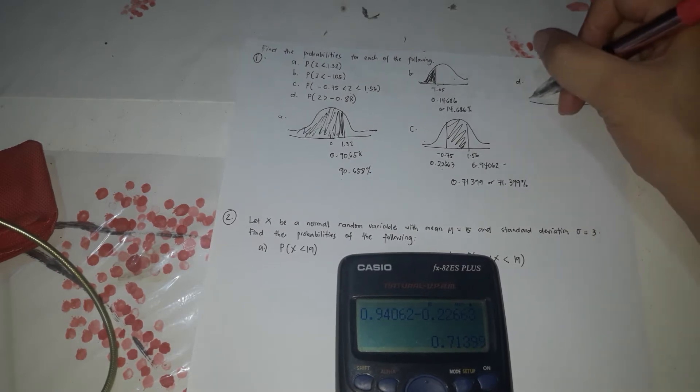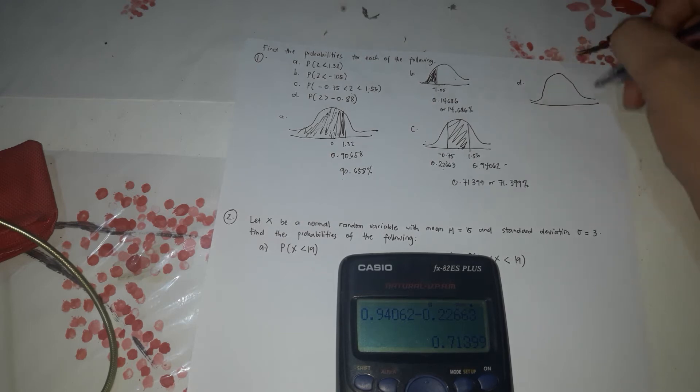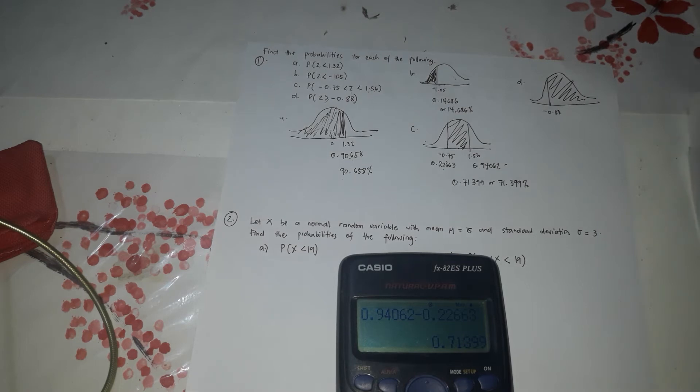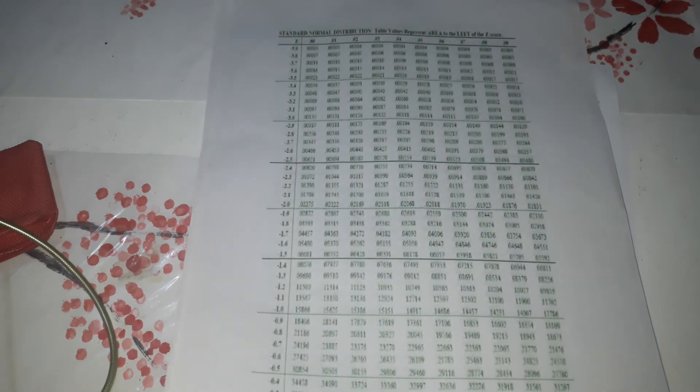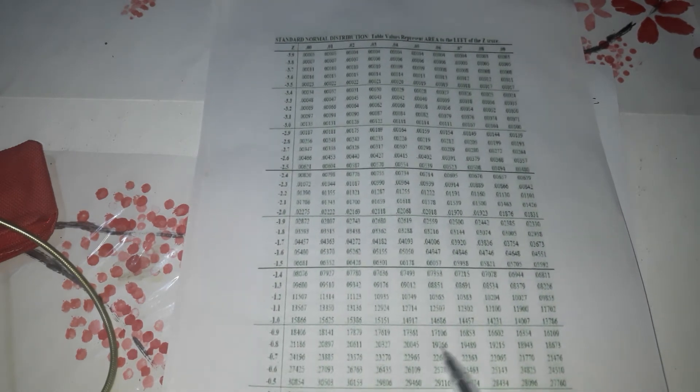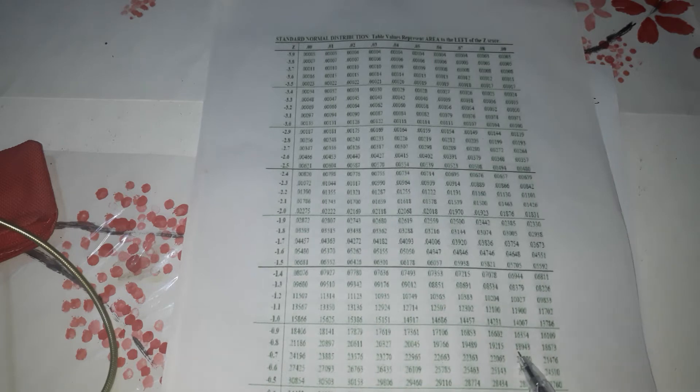What's the probability that it is greater than, z is greater than. Greater than means to the right. Negative 0.88 to the right. So when it's right, let's find negative 0.88 first. Negative 0.88. Negative 0.8.